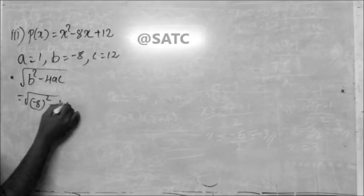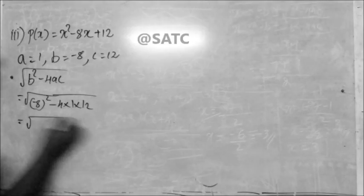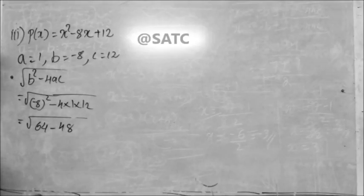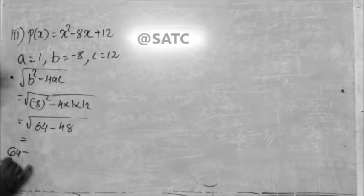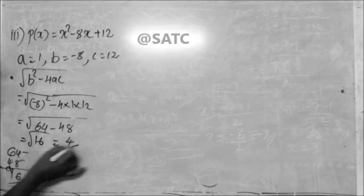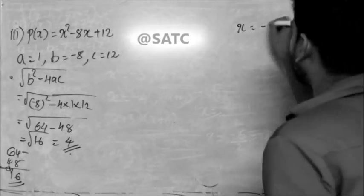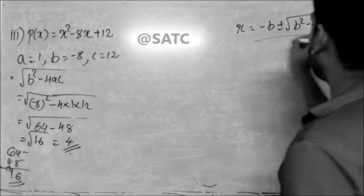Minus 8 squared minus 4, what is c? C equals root of 64 minus 4 into 48. What is 64 minus 48? 64 minus 48. Then the formula: x is equal to minus b plus or minus root of b squared minus 4ac, divided by 2a.